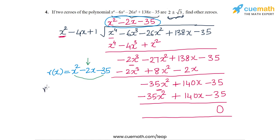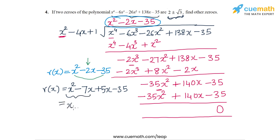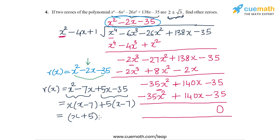These two numbers are 5 and minus 7. So we can split minus 2x as minus 7x plus 5x, giving x squared minus 7x plus 5x minus 35. From the first pair we take out common factor x to get x(x minus 7), and from the second pair we take out 5 to get 5(x minus 7). So R(x) factorizes as (x + 5)(x minus 7), and the zeros of R(x) are minus 5 and 7.